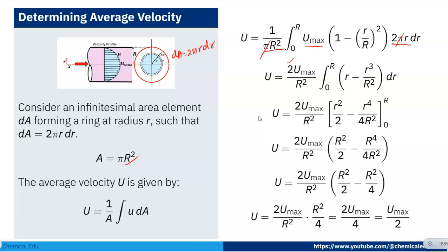Integrating term by term gives r²/2 − r⁴/(4R²), evaluated from 0 to R. Substituting the limit R, this becomes (2 u_max / R²) × [R²/2 − R⁴/(4R²)]. The R² terms cancel, leaving R²/2 − R²/4. After simplification, this becomes (2 u_max) × (R²/4), and the R² terms cancel.